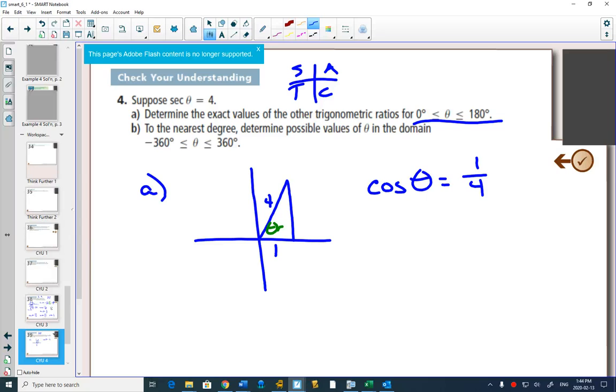What's the other side going to be? Square root of 15. Because now you have the hypotenuse, right? So you'd have to do 16, which is 4 squared, minus 1 squared to get 15 for that other side.